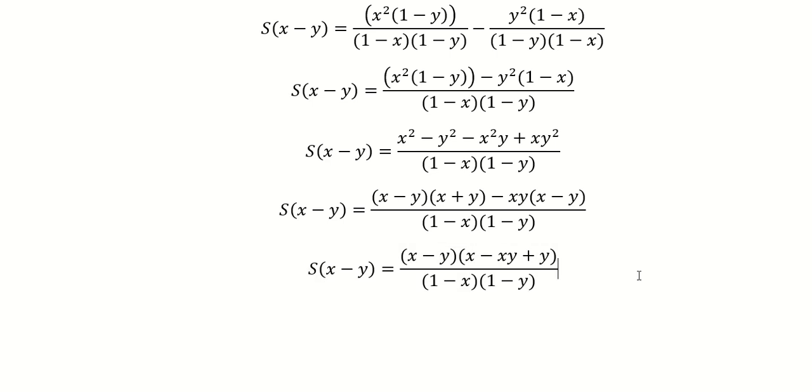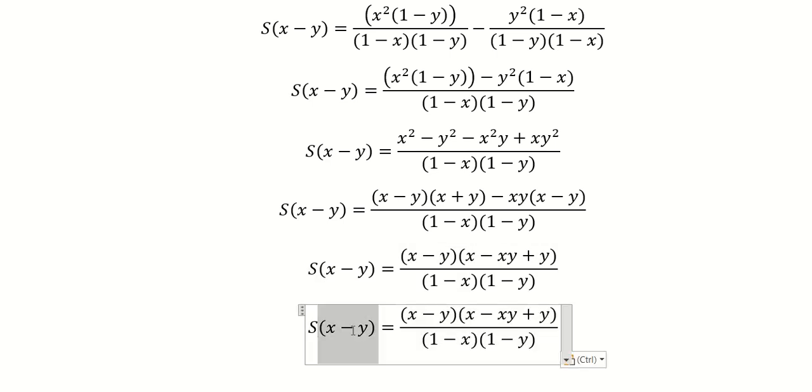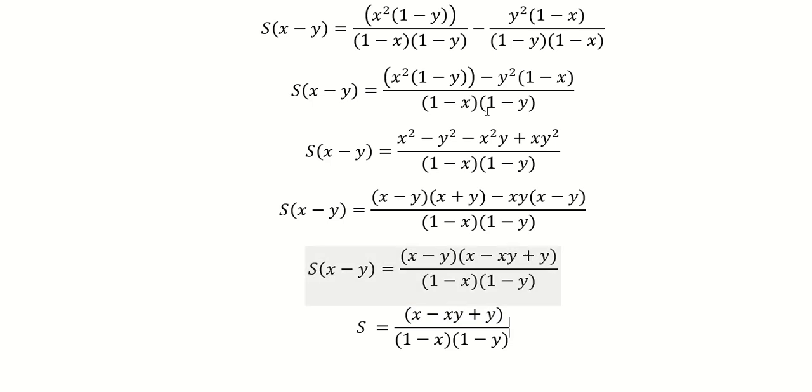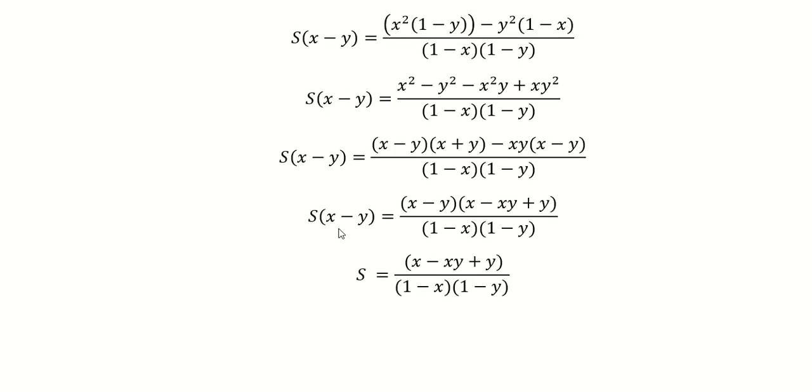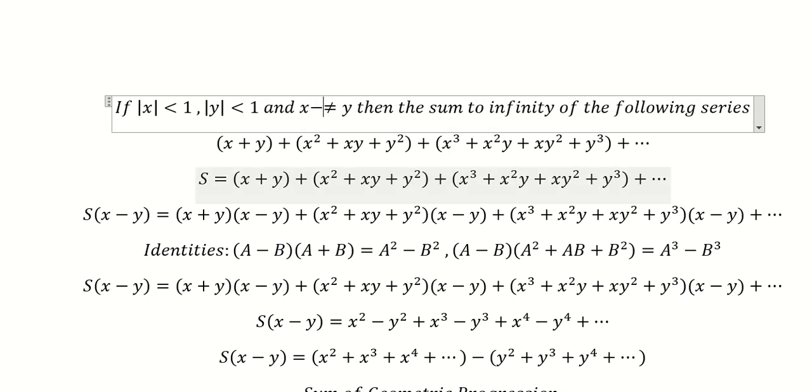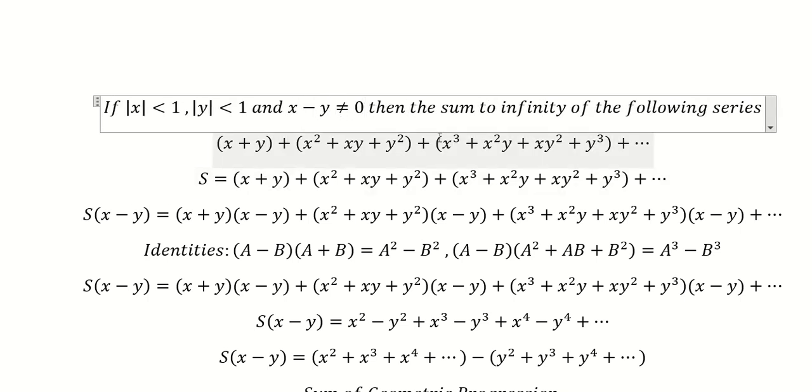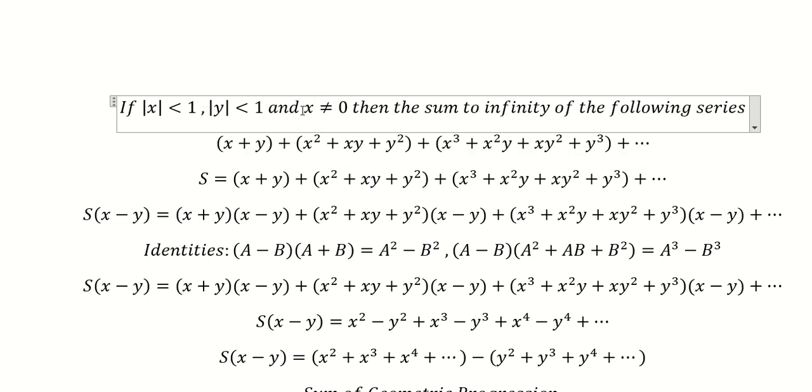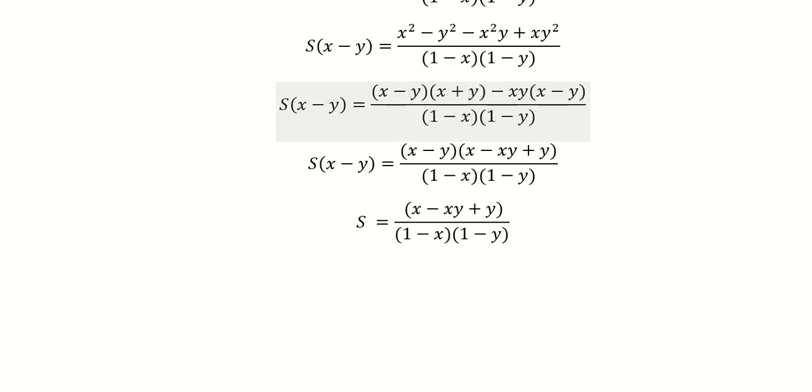So if we divide both sides by S minus y, because we have the condition that if we put y to the left, they cannot equal to zero, that's why we can divide both sides by S minus y. And here is the answer.